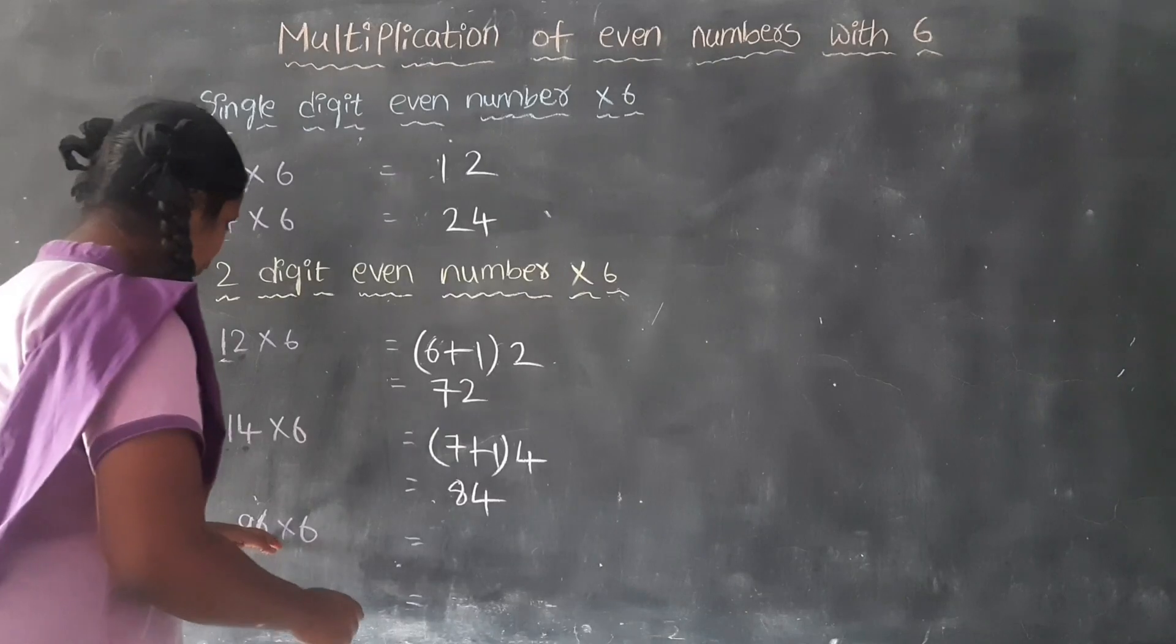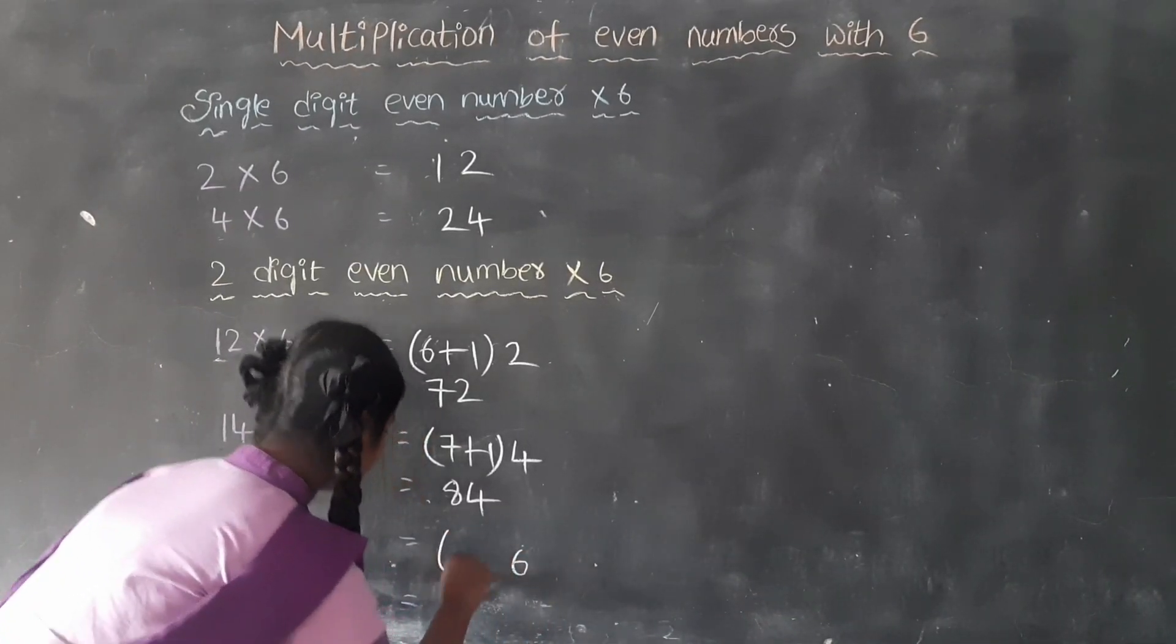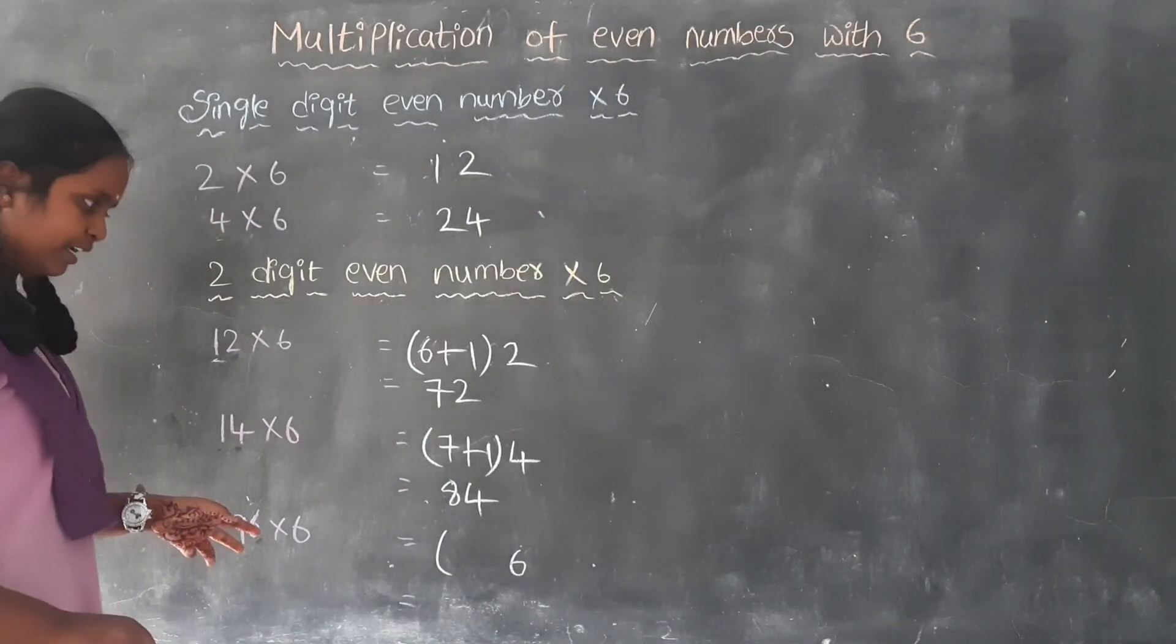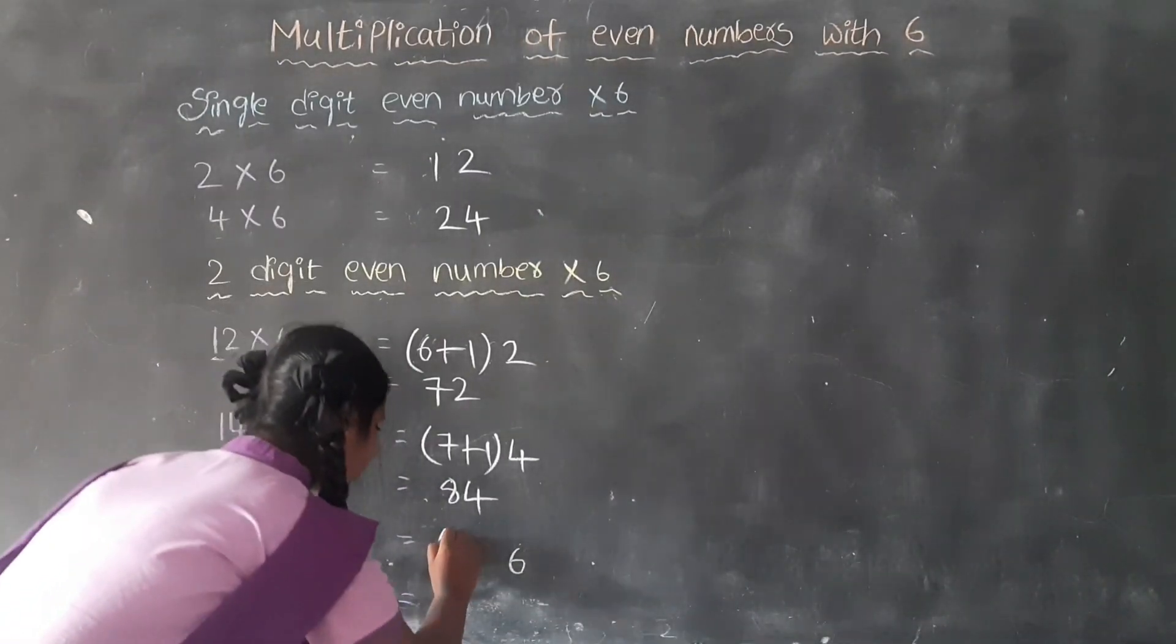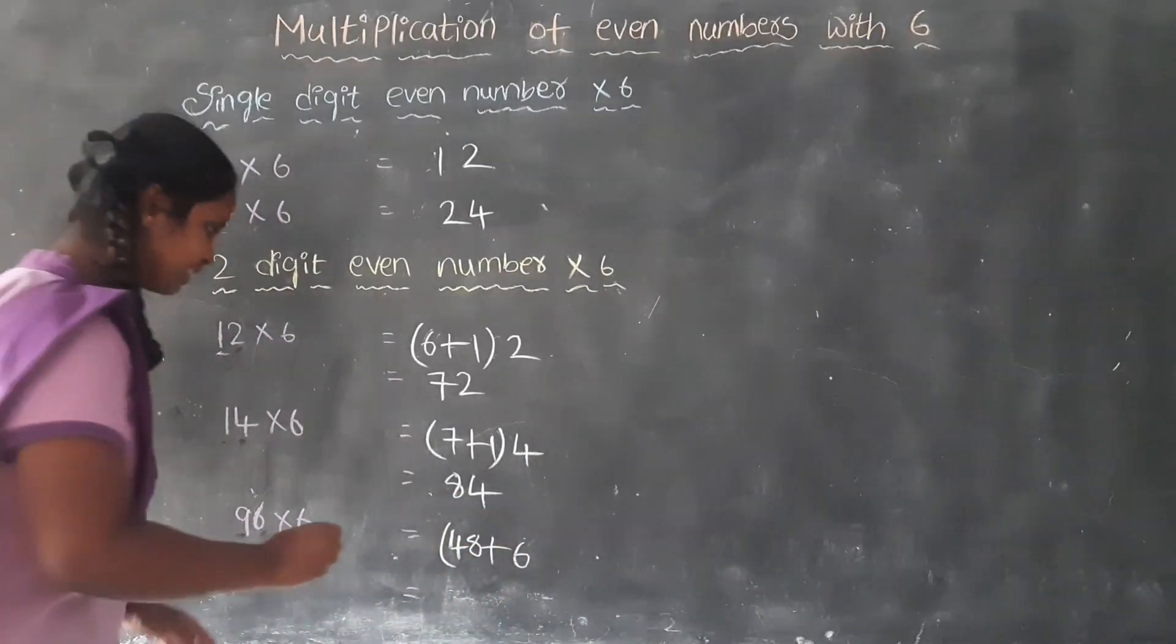96 times 6. First we want to write the unit place as it is: 6. What is the half of 96? 48. Plus, we want to write the tens place as it is.